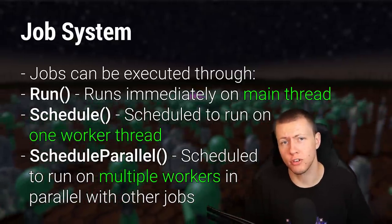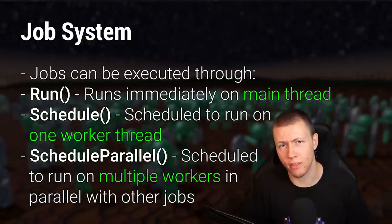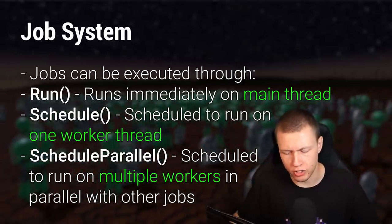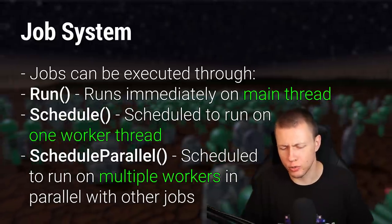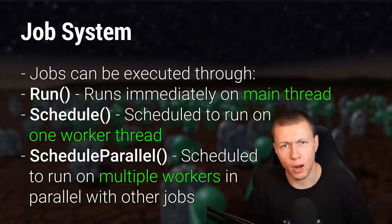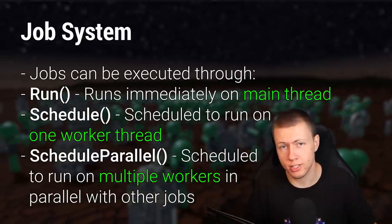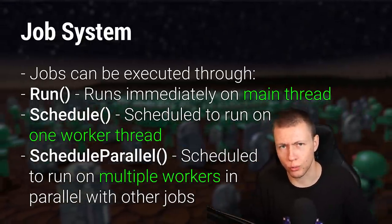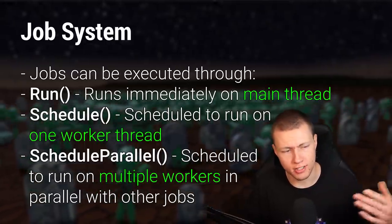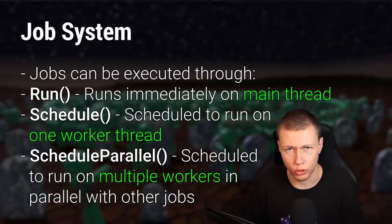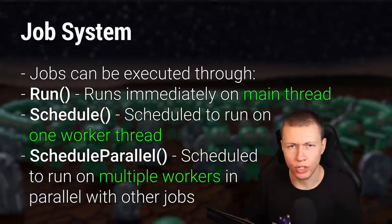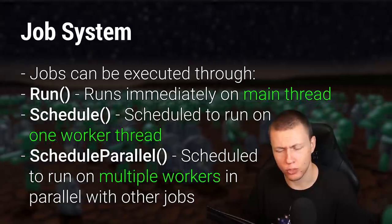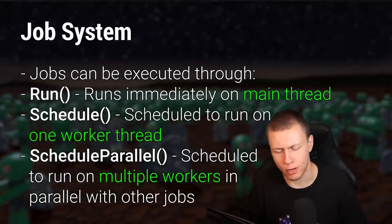There are three ways to schedule a job: Run executes immediately on the main thread — easiest to implement, and often best for small amounts of work on few entities. Schedule runs work on one worker thread. ScheduleParallel runs work across multiple worker threads in parallel — ideally what we want when possible. Schedule is good when ScheduleParallel isn't available, as it still provides automatic dependency management.